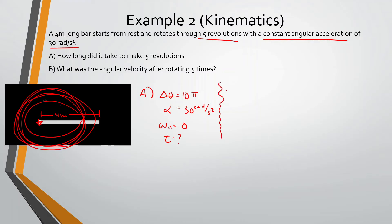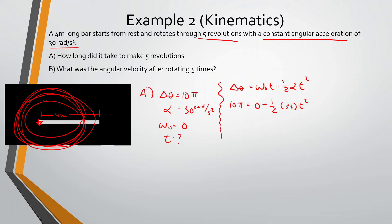Using the same kinematics formulas now in angular form: change in theta equals omega-initial times t plus one-half alpha t squared — same as displacement equals v-initial t plus one-half a t squared. So 10π equals zero plus one-half times 30 times t squared. Solving: 10π divided by 15, then take the square root, gives t = 1.45 seconds. Now what was the angular velocity after rotating five times? We want the final angular velocity. Now that we know the time, omega-final equals omega-initial plus alpha times t.